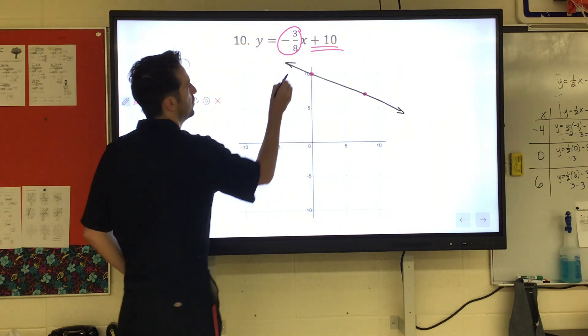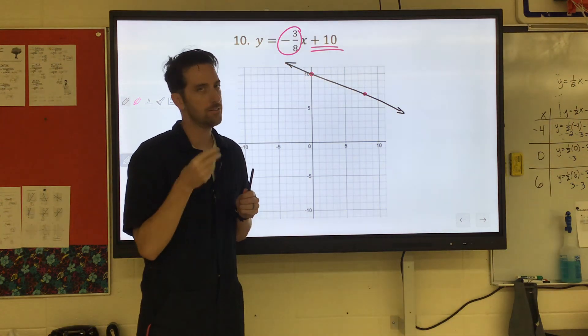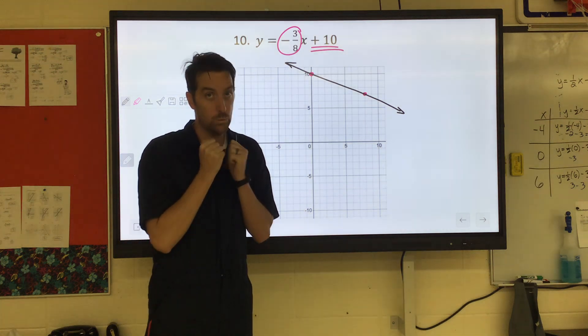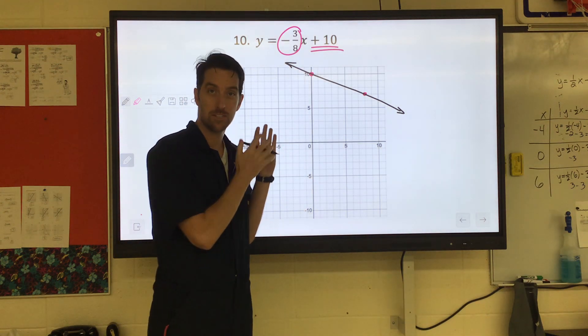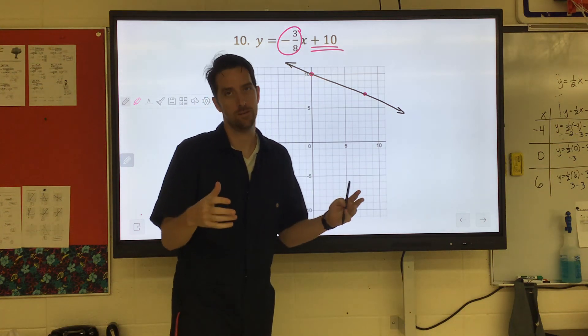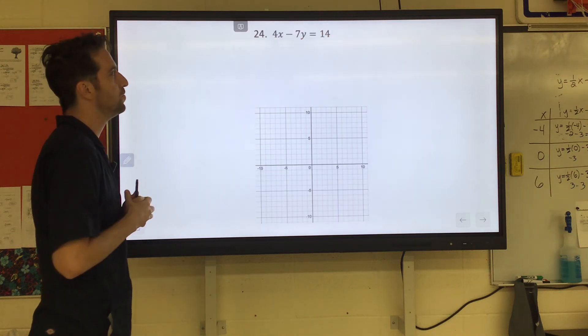Slope intercept form is probably the easiest form to graph in. It goes nice and quick. And then we've got standard form. It's when we have the x's and the y's on the same side of the equal sign, and we solve that by finding the intercepts. So that's going to be the next one we do. So go to number 24.